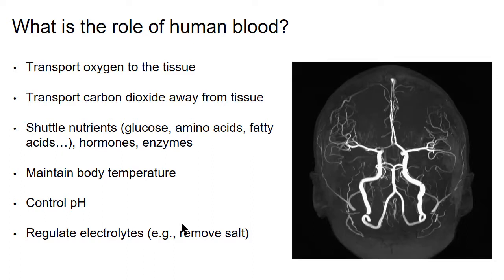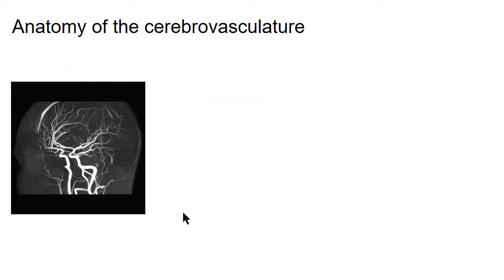What is the role of human blood? Primarily it transports oxygen to the tissue, moves carbon dioxide and other waste products away, and shuttles nutrients like glucose, amino acids, fatty acids, hormones, and enzymes. In addition to transport, it acts as a buffer — regulating body temperature, controlling local pH, and regulating electrolytes. The anatomy of the vasculature has evolved to become very efficient at all of these jobs.